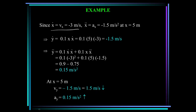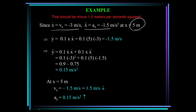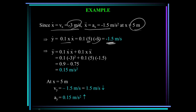We were given x-dot equals minus 3 meters per second and x-double-dot equals minus 1.5 meters per second squared at x equals 5 meters. Substituting into the y-dot equation: 0.1 times 5 times minus 3 gives y-dot equals minus 1.5 meters per second. For y-double-dot: 0.1 times (minus 3) squared plus 0.1 times 5 times minus 1.5 equals 0.15 meters per second squared. So y-dot is negative, pointing down, and y-double-dot is positive, pointing up.